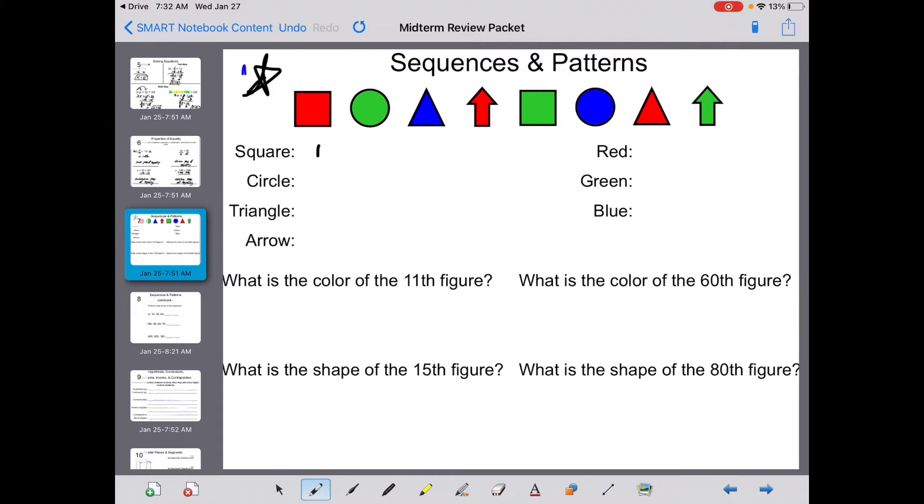Square is 1. Circle is your second figure. Triangle is your third figure. Arrow is your fourth figure. And the pattern starts over. Square is your fifth figure. Circle is 6. Triangle is 7. Arrow is 8. And we're going to continue that pattern through a few more times. In terms of color, we're going to do the same. Red is 1, red is also 4, and red is 7. Green is 2, 5, and 8. Blue is 3, 6, and would be 9. And then you can keep the pattern going.